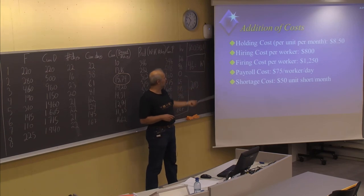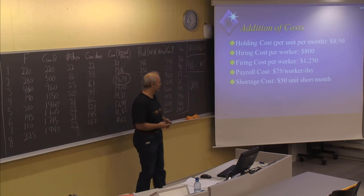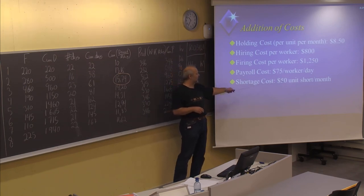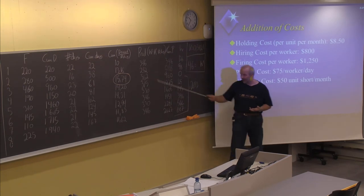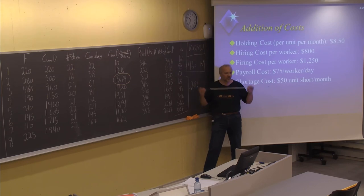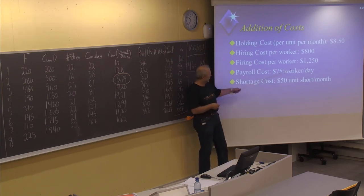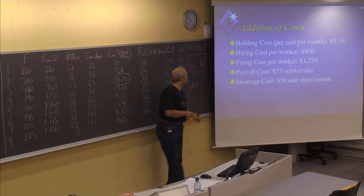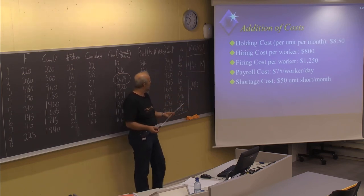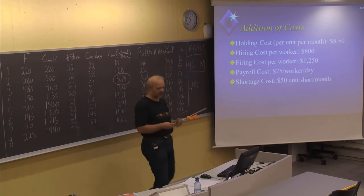The payroll cost is $75 per worker per day. You are also given a shortage cost of $50 per unit short per month, but in our plan we don't have any shortage. In more advanced models with stochastic or uncertain demand, you need to calculate shortage costs. In some cases it may be cheaper to allow a shortage rather than carry very large inventory overproduction.